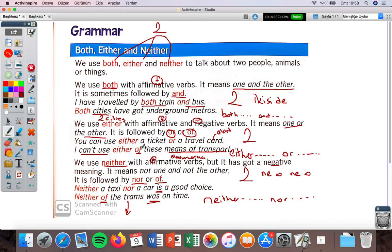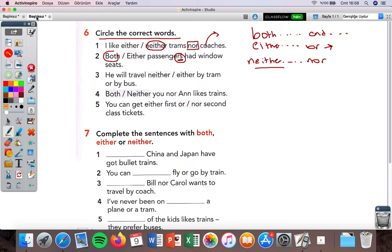If either is used, it carries a singular meaning, so the word here wouldn't be plural. But the word here is plural, so I need something that covers both passengers. That's 'both'. Both passengers had window seats. Let me go back - when both comes before a noun directly, either and neither generally come with 'of'. If they come before a noun, they usually come with 'of'.